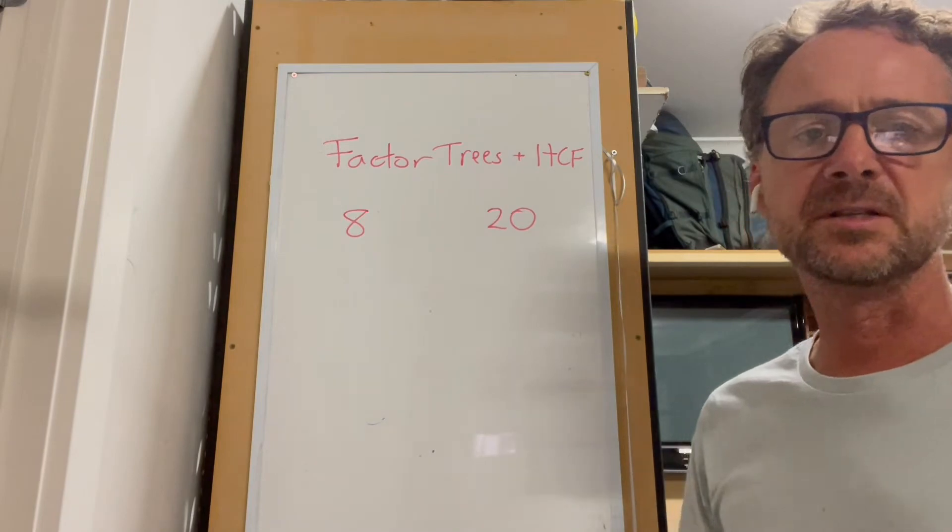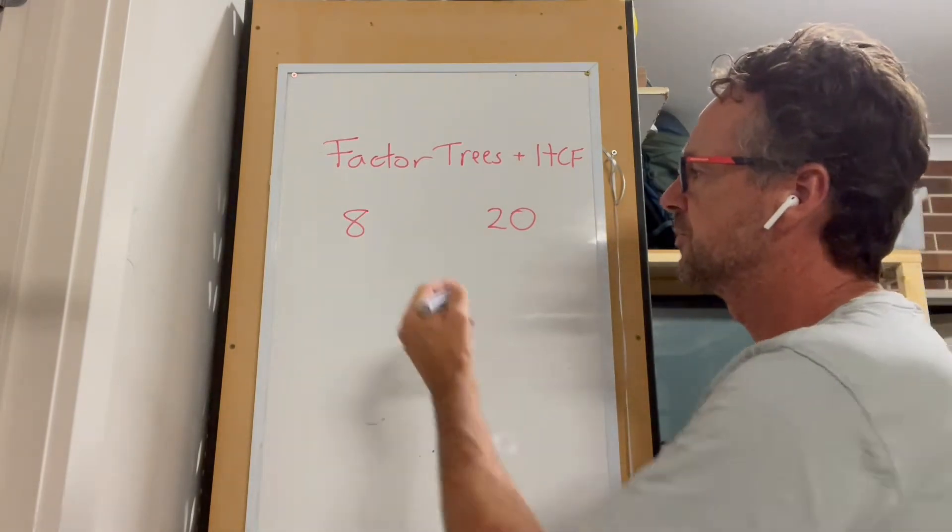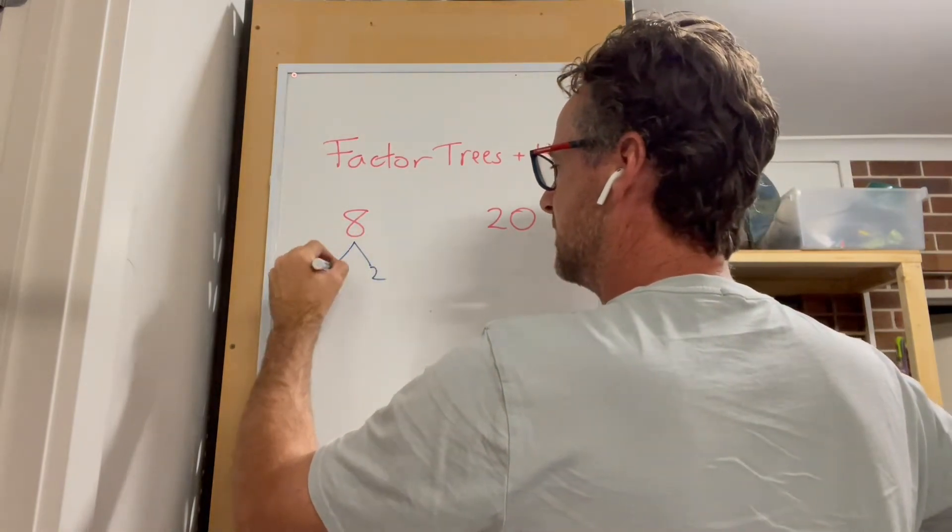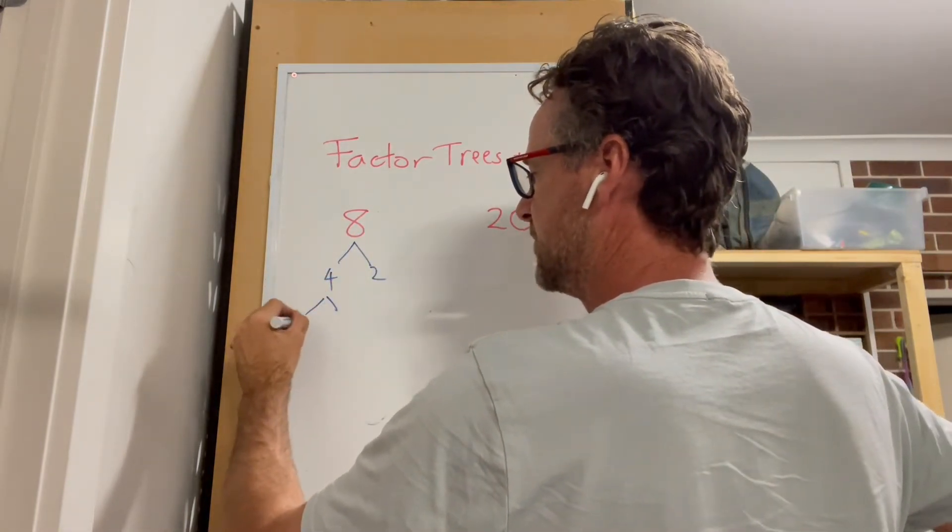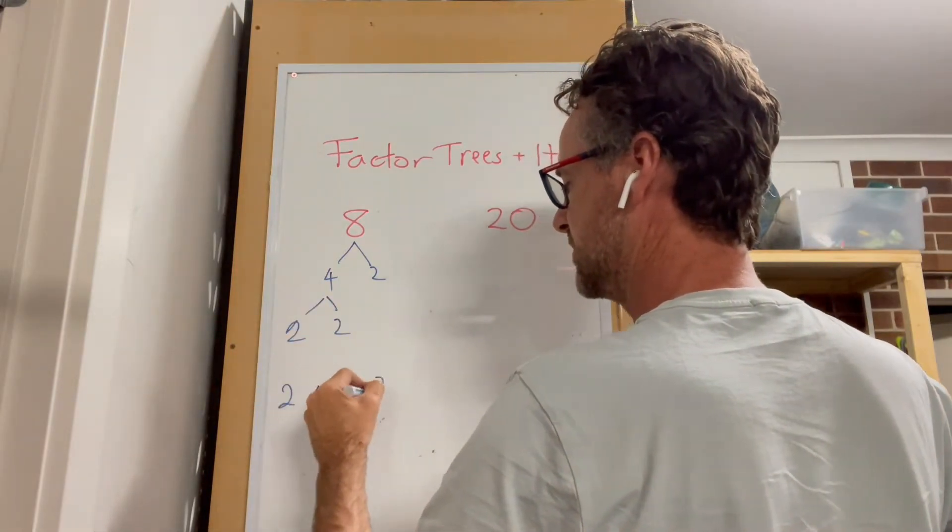Now let's look at factor trees and the highest common factor. First, let's look at our factor trees. Here we have 8: that's 2 and 4, and that becomes 2 and 2, so we've got 2 times 2 times 2.